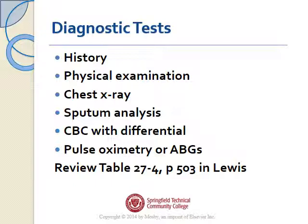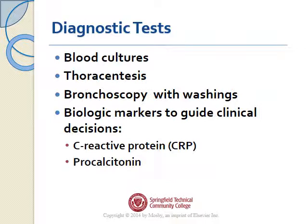Diagnostic tests include history and physical examination, chest x-ray, sputum analysis, CBC with differential to assess white blood cell count, oximetry or arterial blood gas values, blood cultures, thoracentesis if there's fluid that needs to be tapped from the chest wall, bronchoscopy for intubated patients to take samples directly from the lungs, and biologic markers such as CRP, procalcitonin, or sed rate — typically used to see how well a patient is responding to antibiotics.